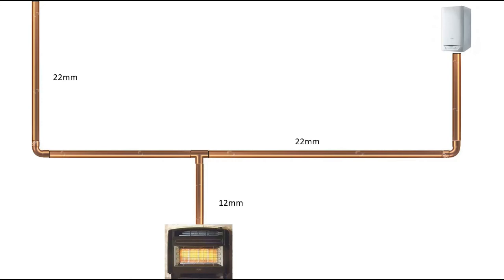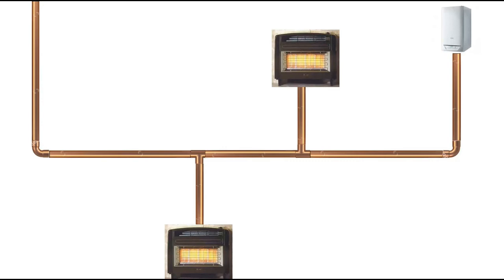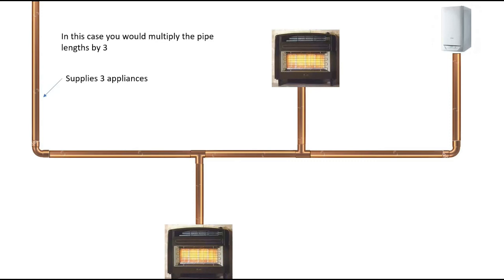If there were three appliances on the system, we simply take each pipe length — A to B, B to C, C to D, D to E — and multiply each by three. If there were four appliances, we multiply by four; five appliances, multiply by five. In this example, the first run A to B supplies three appliances because if you took it away none of them would get gas. The middle section only supplies two appliances, and the remaining two pipes only supply one appliance each. Pipe sizing made simple.